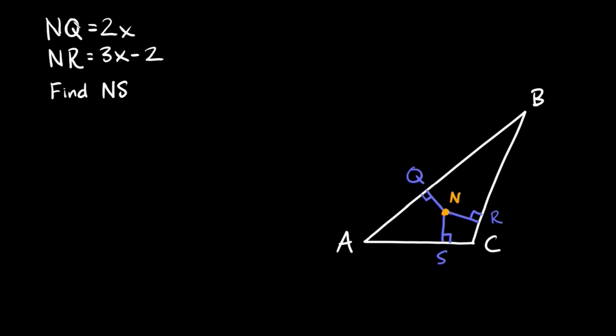So here the problem says that the distance NQ is equal to 2x. So the distance from N to Q here I'll just write it like that. That's 2x. The distance from N to R is 3x minus 2. So N to R is equal to 3x minus 2 and we're trying to find the distance from N to S. So we're trying to figure out what this distance is right here.